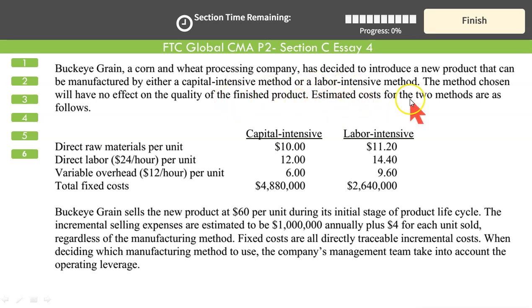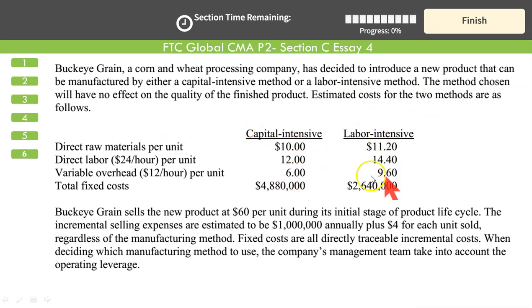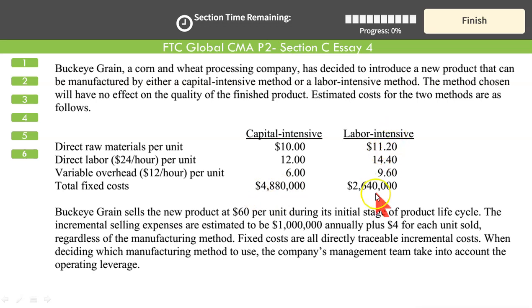Estimated costs for the two methods are as follows: direct material for both methods, labor, variable overheads, and fixed overheads. As you can see, in capital intensive the fixed cost is higher, while under labor intensive the fixed cost is lower — of course, that's what you would have expected.